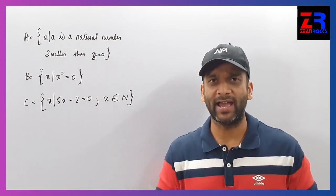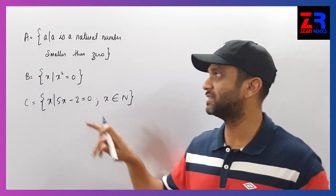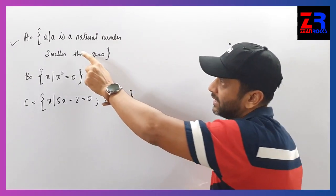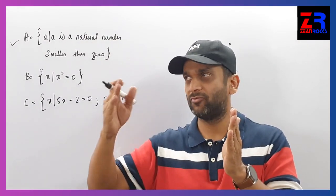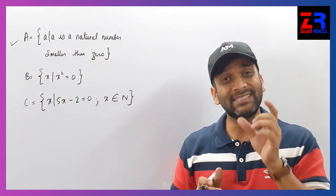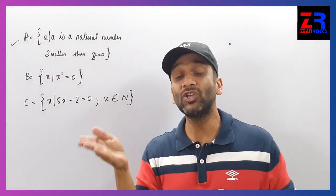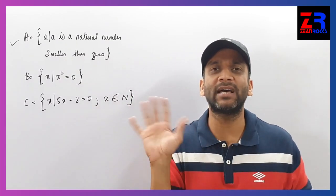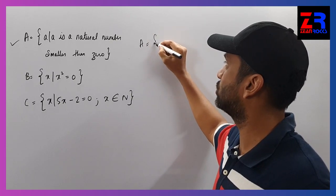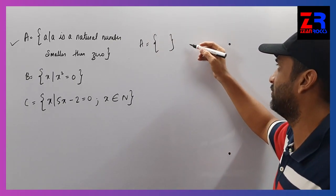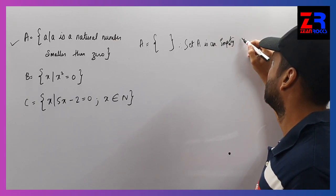Question number 3: identify which of the following are empty sets. First question - A is equal to X such that X is a natural number smaller than 0. Natural numbers start from 1, 2, 3, 4, 5, 6 and go to infinity. 0 is not a natural number, and numbers less than 0 are negative, which are not natural numbers. So no element can come into this set - set A is an empty set.